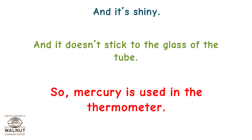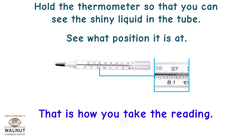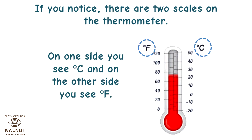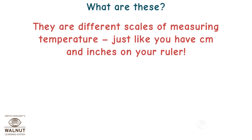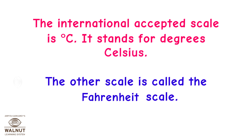So mercury is used in the thermometer. Hold the thermometer so that you can see the shiny liquid in the tube and see what position it is at — that is how you take the reading. If you notice, there are two scales on the thermometer. On one side you can see degrees Celsius, and on the other side degrees Fahrenheit. They are different scales of measuring temperature, just like you have centimeters and inches on your ruler. The internationally accepted scale is degrees Celsius. The other scale is called the Fahrenheit scale.